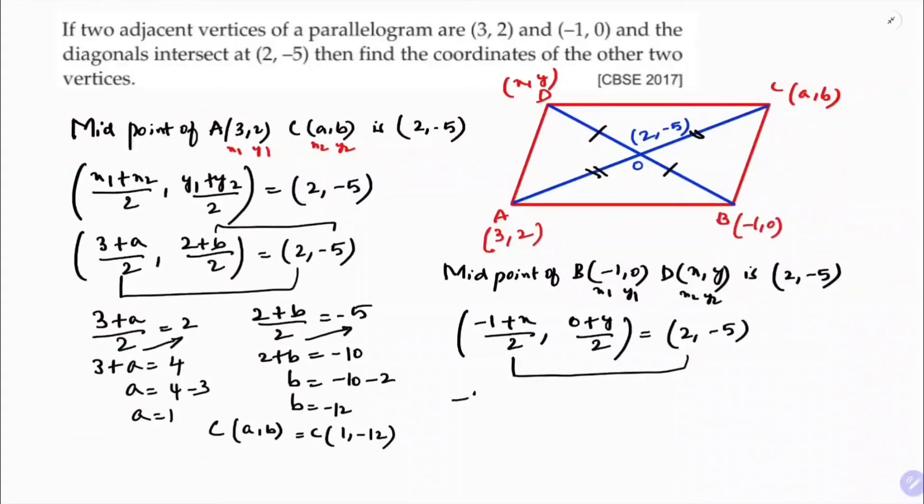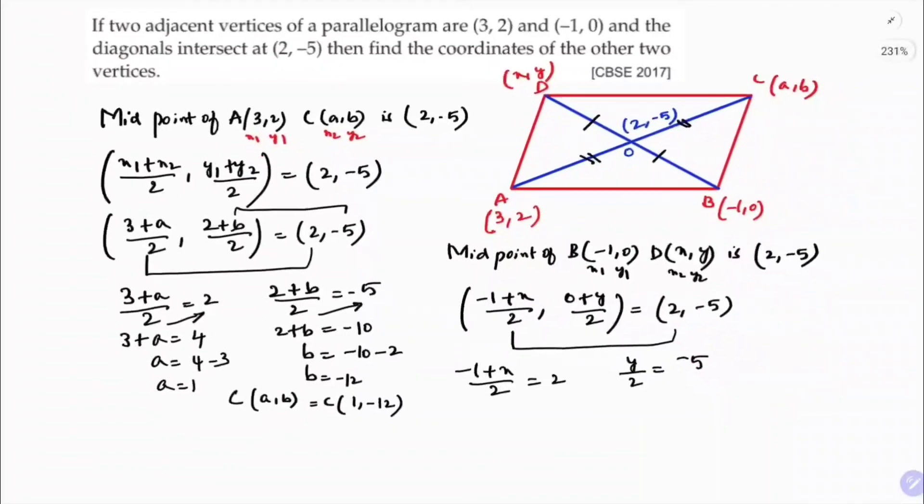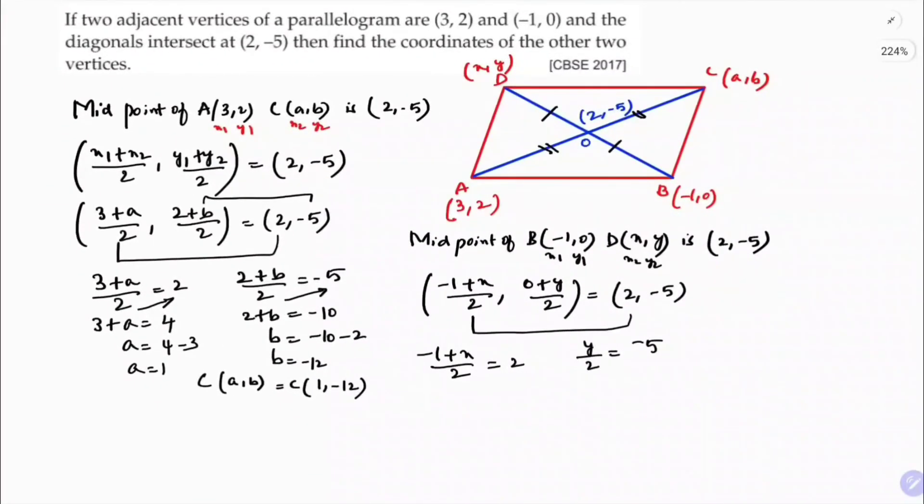If I equate abscissa with abscissa here, (-1+x)/2 = 2, (0+y)/2 = -5. So -1+x = 2 times 2, which equals 4. So x = 4+1, which is 5.